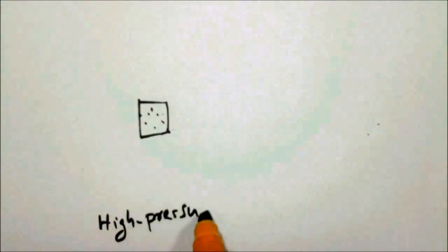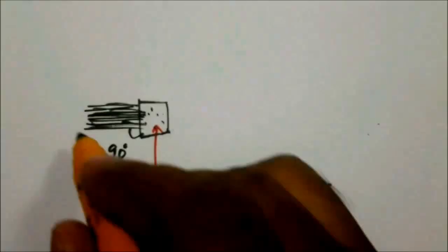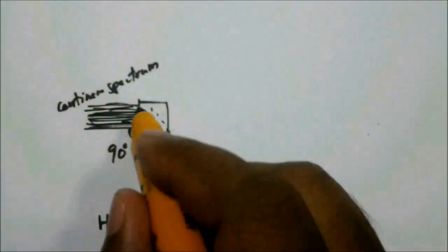If the continuous spectrum of light is incident on a high pressure hydrogen gas, more different wavelength photons would be absorbed and thus the number of different wavelength photons that pass straight through the hydrogen gas will be reduced.